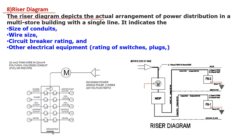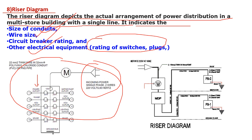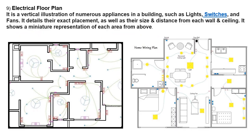The next type is the riser diagram. The riser diagram depicts the actual arrangement of power distribution in a multi-storey building with a single line. It indicates the size of conduits, wire size, circuit breaker rating, and other electrical components or equipment such as rating switches or plugs. In this riser diagram, the incoming power single-phase wires are used and the steps are shown in rising condition. Here we see examples of riser diagrams where MDP, PB circuits, panels, and bolts are shown.